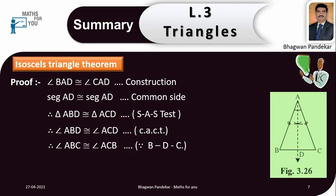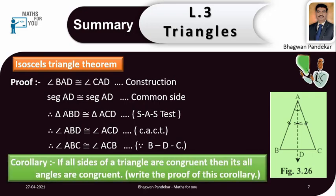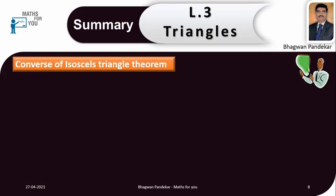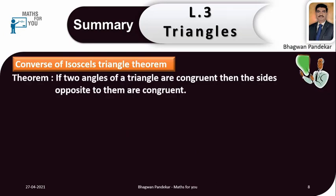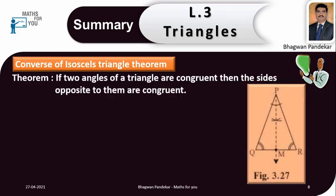Reason: we know that B-D-C are in a linear point corollary. Corollary: if all sides of a triangle are congruent, then all its angles are congruent. Write the proof of this corollary yourself. Converse of isosceles triangle theorem: if two angles of a triangle are congruent, then the sides opposite to them are congruent.